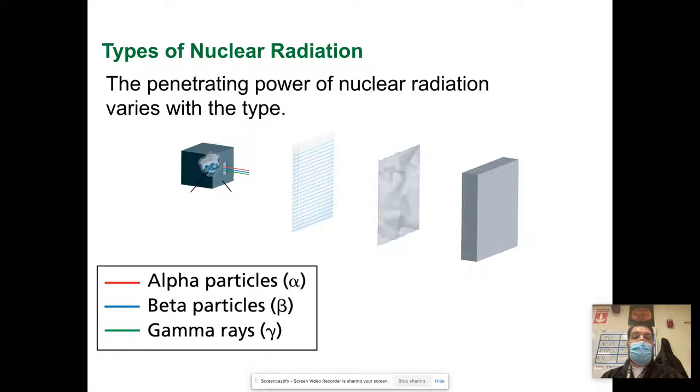The penetrating power of nuclear radiation varies with the type. Some of these particles can go through surfaces. Alpha particles can't go through a sheet of paper, but beta and gamma particles can. Gamma rays, because they don't have mass, can also go through metal and they can even go through things like cement.